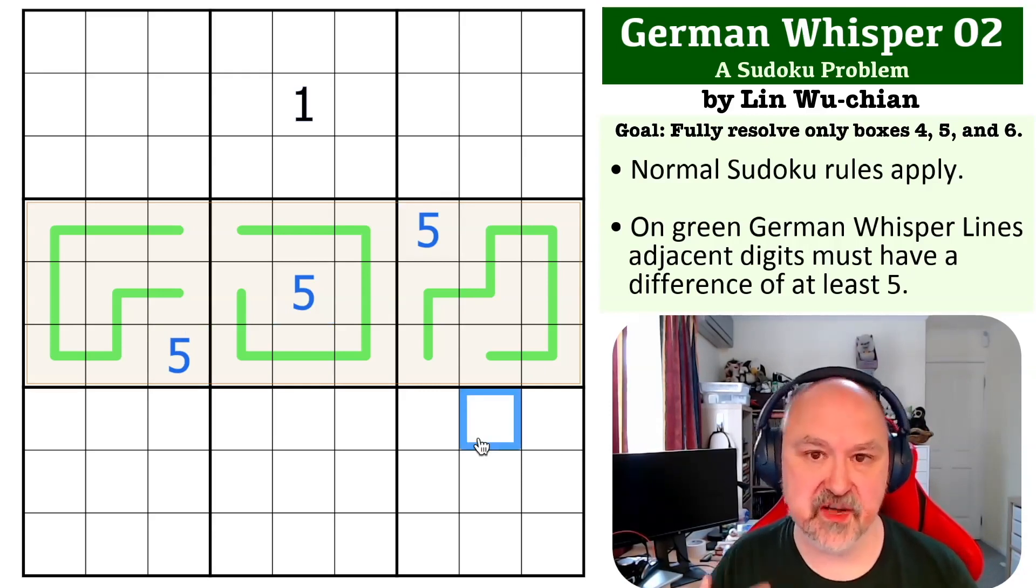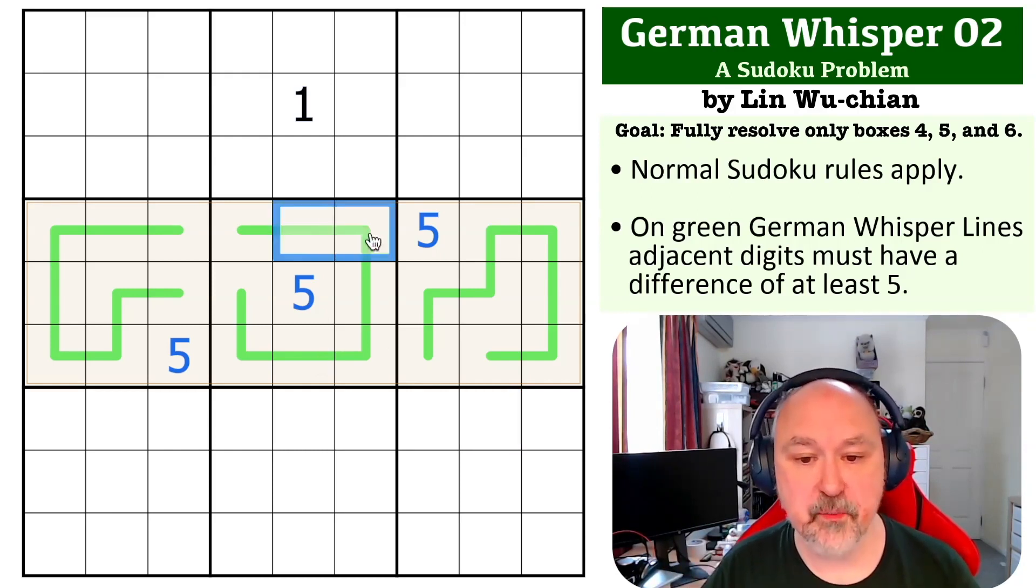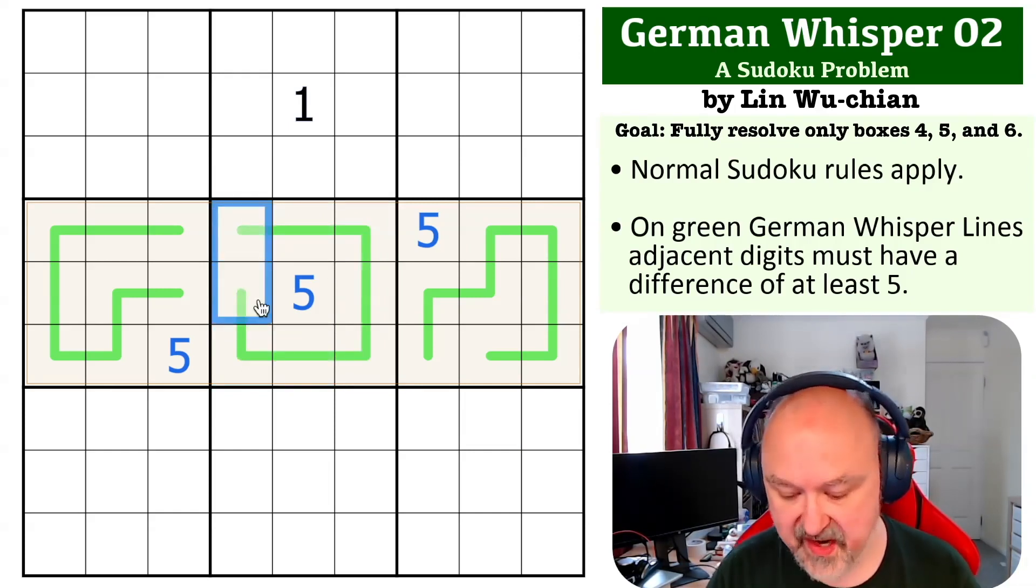The next most constrained digits are 4s and 6s. If you think about 4s and 6s, I'm going to focus on box 5 for now. Any 4 or 6 only has a single digit that can go next to it. 4, the only digit that's 5 away is 9. 6, the only digit that is 5 away is 1. So you can never put a 4 or a 6 anywhere where there would be two digits adjacent to it. They have to go at the end.